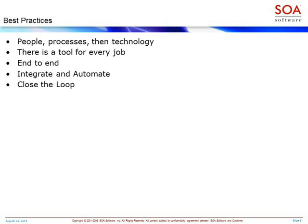Let's look at the common best practices. I'm going to talk anecdotally about these best practices and try to put them in the context of real-world scenarios or customer case studies. The first best practice is people, process, then technology — how to take care of the people and processes within your organization and then ultimately look at technology. Speaking of technology, there is a tool for every job. The SOA landscape is complex, with many tools that can do many different things, and there's always a danger that if you have a hammer, everything starts looking like a nail.